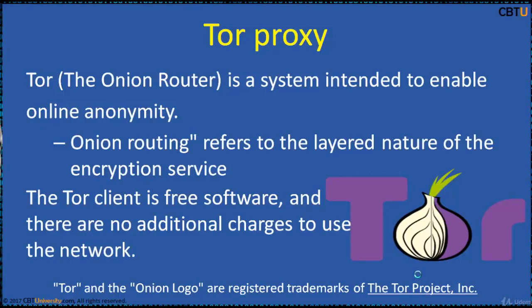TOR is intended to protect users' personal freedom, privacy, and ability to conduct confidential business by keeping their internet activities from being monitored. Onion routing refers to the layered nature of the encryption service. The original data is encrypted and re-encrypted multiple times, then sent through successive TOR relays, each of which decrypts a layer of encryption before passing the data on to the next relay and ultimately the destination. TOR client is free software with no additional charges.